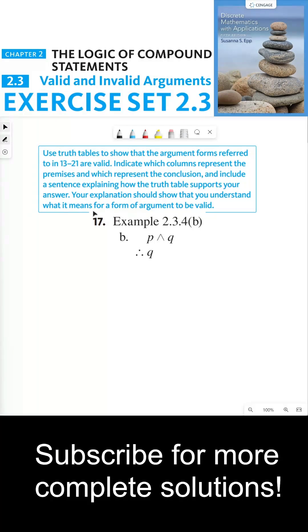Your explanation should show that you understand what it means for the form of argument to be valid. So number 17 says example 2.3.4b. And so I found 2.3.4b, which is right here.